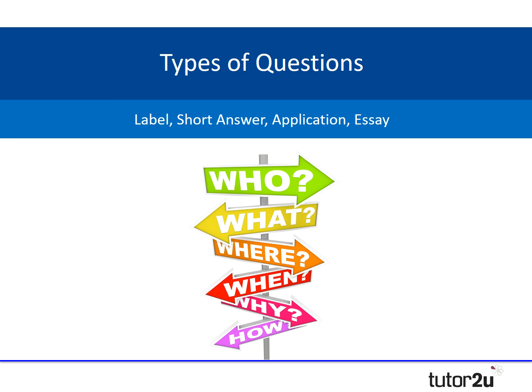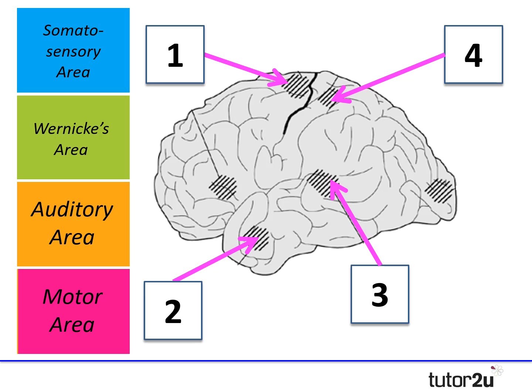Now we move on to the different types of questions you can get in the exam: labelling the diagram, a short answer question, application question, and an essay question. I always say this when it comes to biopsychology — there's no point looking at really complex diagrams from textbooks. In the exam, you're going to get a black and white 2D image and simply be asked to label it. Using actual exam material here is really worthwhile.